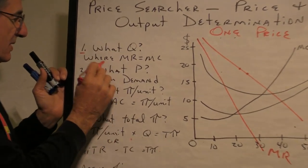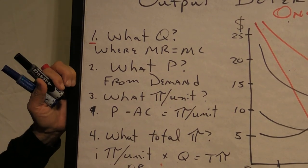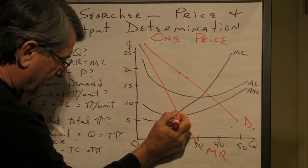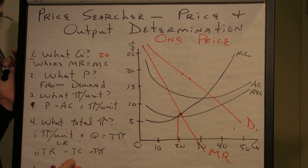First, what quantity should the firm produce? The rule for this is produce where marginal revenue is equal to marginal cost. So, here's marginal revenue, there's marginal cost, that's where they're equal. And that's the quantity that the firm will produce, 20 units.